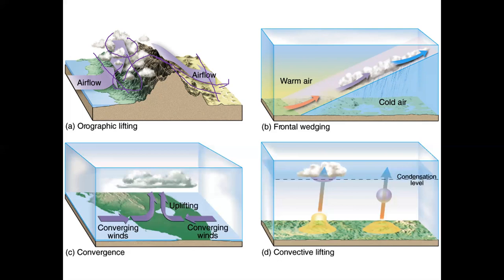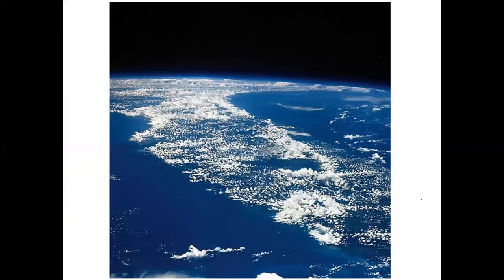Convective lifting — warm air rises and reaches the lifting condensation level. Whatever the temperature is there, that's the dew point temperature, and we get a cloud that forms.